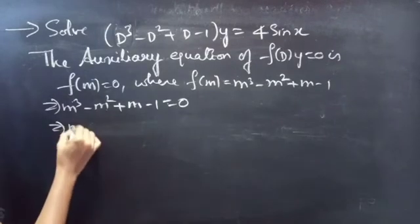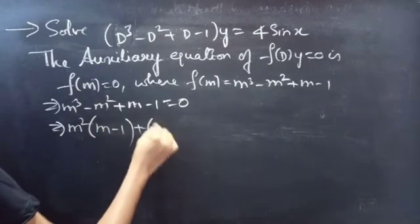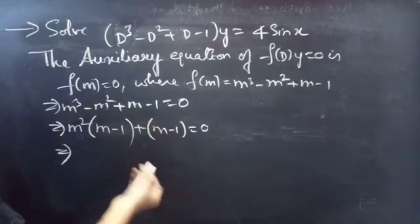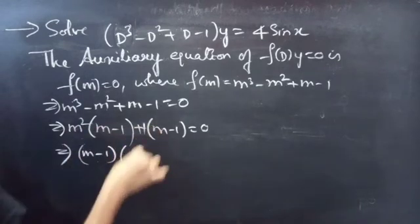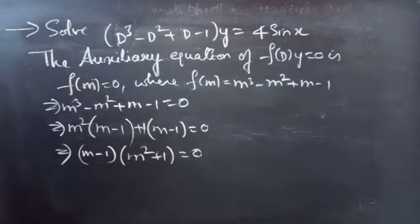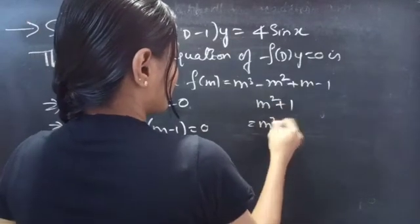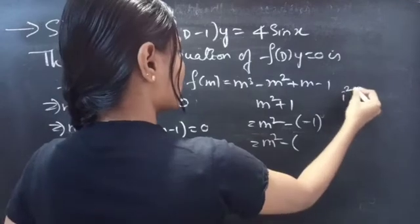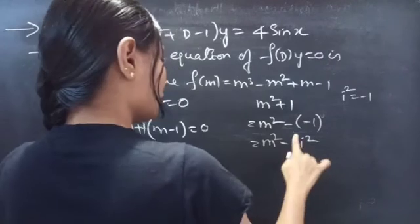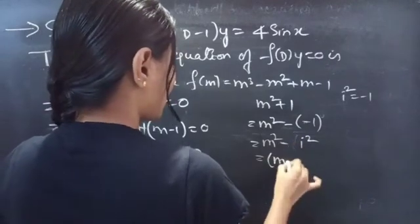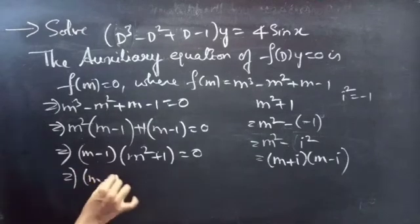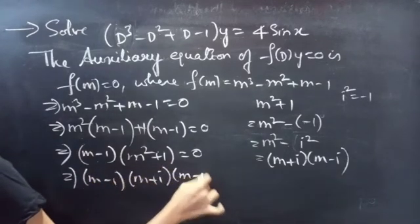Take m² common from the first two terms: m²(m - 1) + (m - 1) = 0. Notice (m - 1) is common in both terms, so we get (m - 1)(m² + 1) = 0. Now, m² + 1 = m² - (-1) = m² - i², which is of the form a² - b², so factors are (m + i)(m - i). Therefore: (m - 1)(m + i)(m - i) = 0.